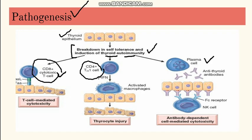When the CD8 cells, also known as cytotoxic T cells, activate — they are direct killers, they are cytotoxic cells — they lead to T cell-mediated cytotoxicity and they injure the thyroid epithelium. Then there are CD4 cells, which mostly produce various cytokines like interferon gamma. Interferon gamma is responsible for activating macrophages, and these macrophages in turn cause thyroid epithelium injury.